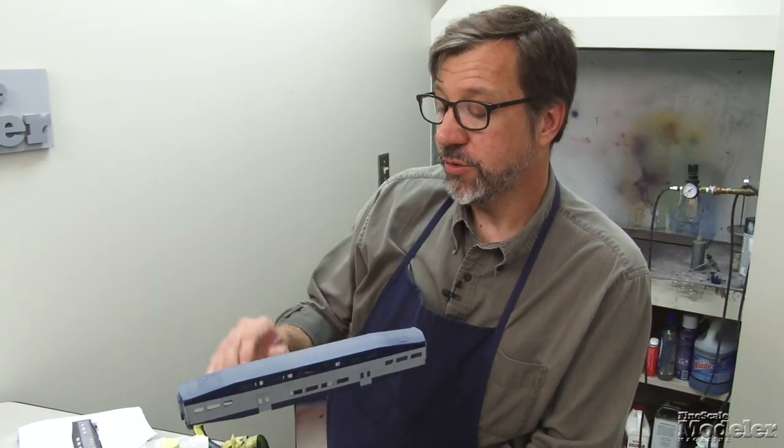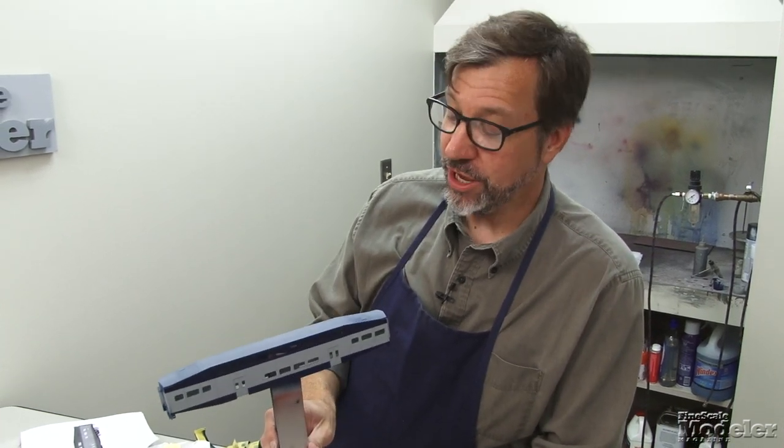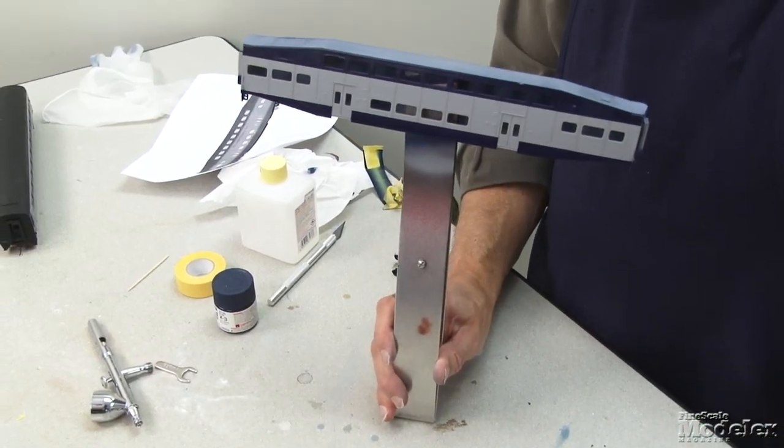We still have a little bit of work to do. We're going to mask and paint the roof and the ends of the cars black. But we've got to let the blue dry properly because this is still pretty tacky and the tape will just destroy it at this point.